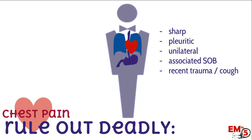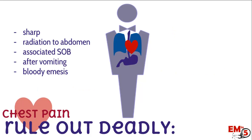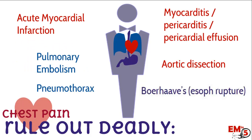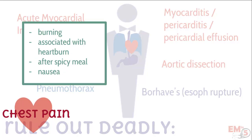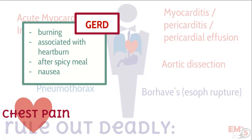What if they had been coughing a lot from a cold, and then suddenly developed sharp chest pain on the right side and are really short of breath? That's pneumothorax. What if they've been vomiting a lot, there's blood in the vomit, and they have horrible sharp chest pain, abdominal pain, and shortness of breath? That's Boerhaave's. Also consider non-deadly causes: burning sensation with acid reflux worse after spicy meals points to GERD, and an aching chest tender to palpation worse with twisting or lifting suggests musculoskeletal strain.